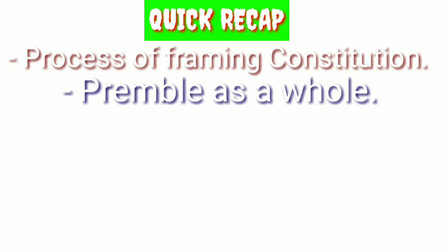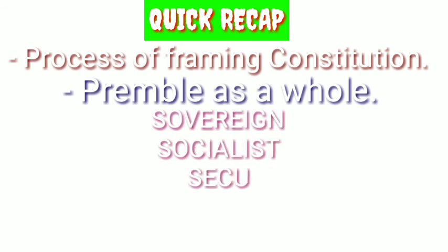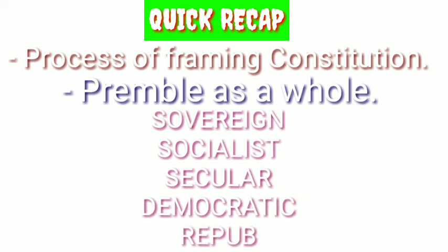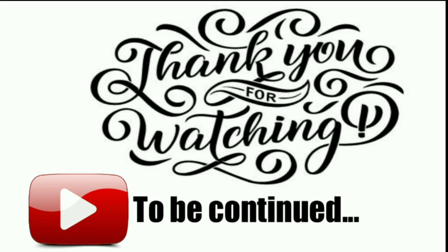Let's revise what we discussed today: we saw the further processes of how the Constitution came into existence, then we discussed the Preamble — what it is and what it contains — including sovereignty, socialism, secularism, unity, integrity, fraternity, and justice. All these things are written in the Constitution, but the Preamble presents them precisely in few words. Remember the activity given today — in the next video, I will give you the answers. Take care of yourself. Thank you so much.